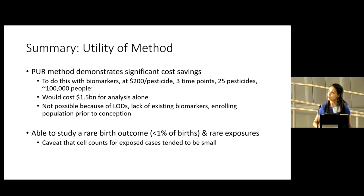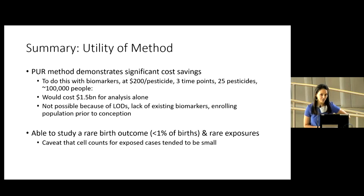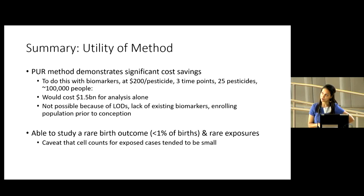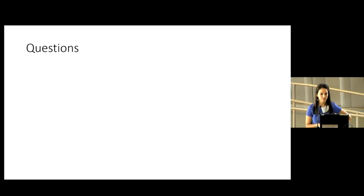The PUR method also demonstrates significant cost savings. To have done this study with biomarkers would have cost $1.5 billion for the analysis alone — and that's not possible, not just because of cost, but because the laboratory methods don't really exist and aren't suited for this type of analysis. We were also able to study a rare birth outcome at less than 1% of births and rare exposures, with the caveat that cell counts for some exposed cases tended to be small.